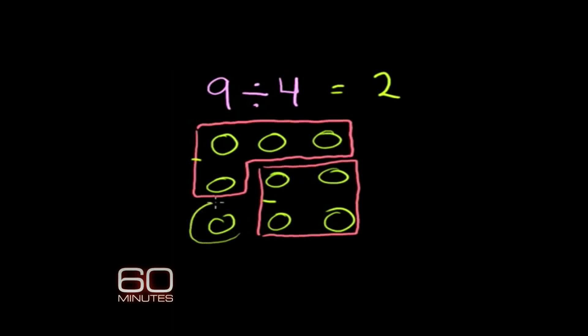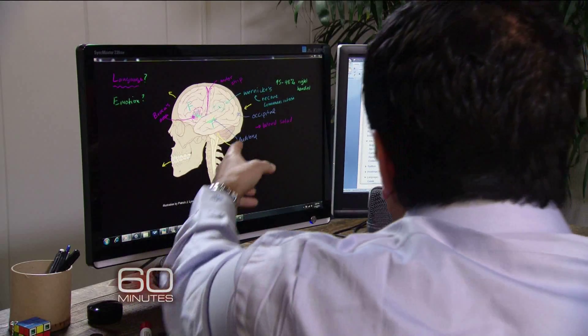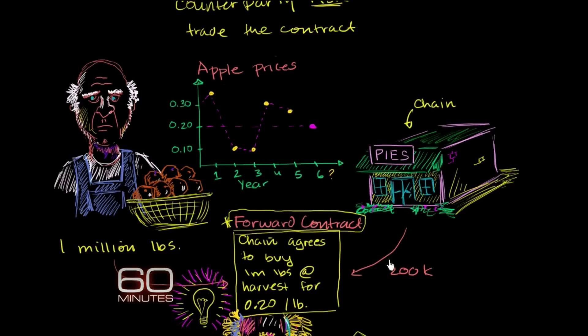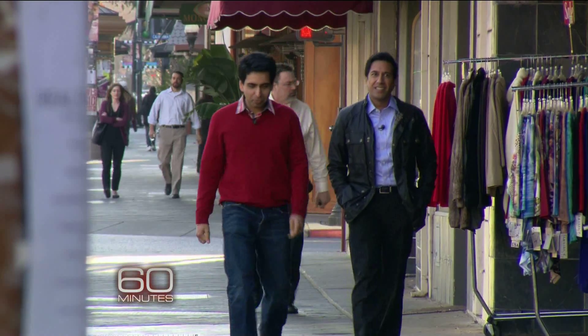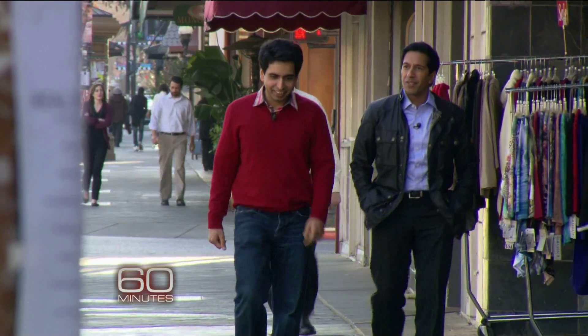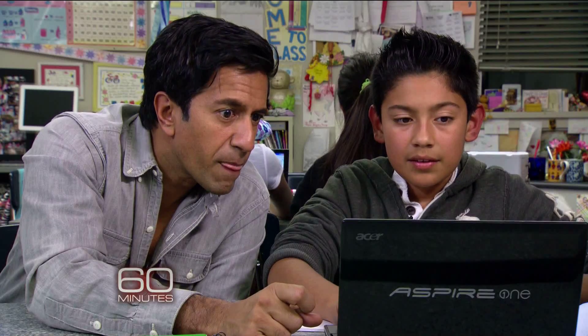Inside classrooms, it's just Khan Academy math for now. But Sal Khan believes his strategy can be used to teach subjects like history and science, and not just in elementary schools, but high schools and even colleges. No matter how big or how successful Khan Academy gets, Sal Khan promises he'll never put a price tag on it. As a not-for-profit, our mission is to educate children as well as possible — a free, world-class education for anyone, anywhere. And that's what sixth grader Alex Hernandez says he needs.